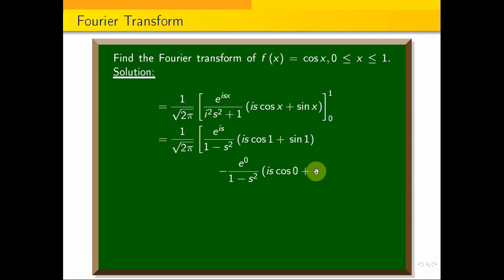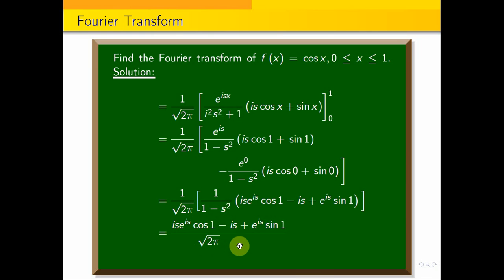Simplifying: 1/√(2π) times 1/(1 - s²) times [e^(is) times is cos 1 plus e^(is) sin 1 minus is]. The answer for this problem is [e^(is)(is cos 1 + sin 1) - is] divided by √(2π)(1 - s²). This is the answer for this problem.